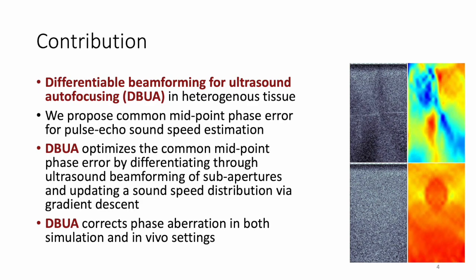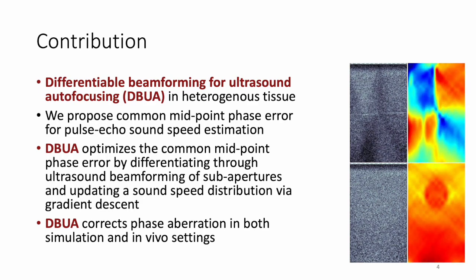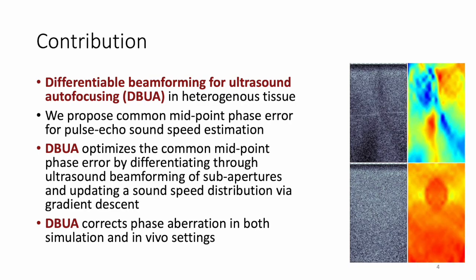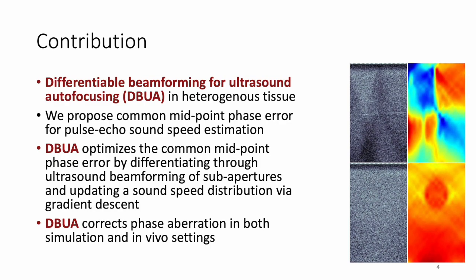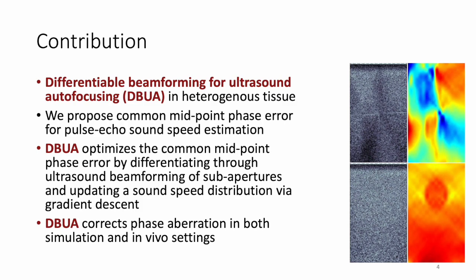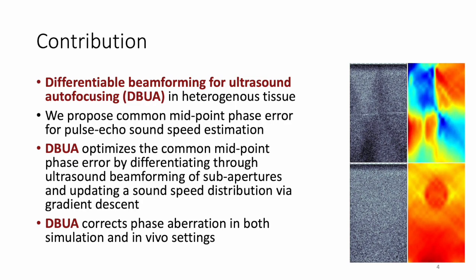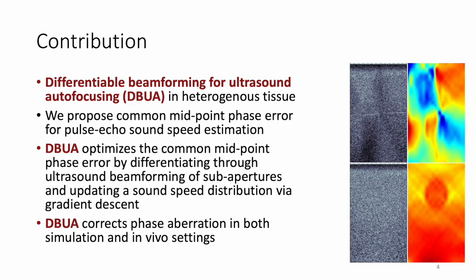We aim to connect the sound speed estimation and aberration correction problems in a closed-loop optimization framework. We propose differentiable beamforming for ultrasound autofocusing, a physics-informed framework for the joint quantitative estimation of distributed local sound speed and correction of phase aberration in heterogeneous tissue. Inspired by statistical and Fourier optics, we introduce common midpoint phase error as a focusing criterion for pulse-echo sound speed estimation. Our method minimizes the common midpoint phase error by differentiating through the ultrasound beamforming of sub-aperture images and updating a sound speed distribution via gradient descent.